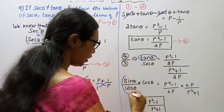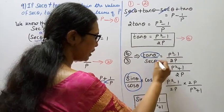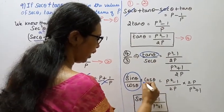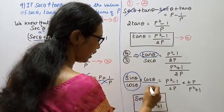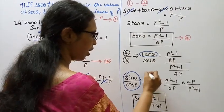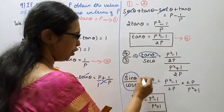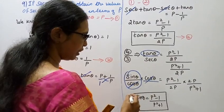Sin θ by cos θ divided by 1 by cos θ. The cos θ terms cancel, leaving sin θ.